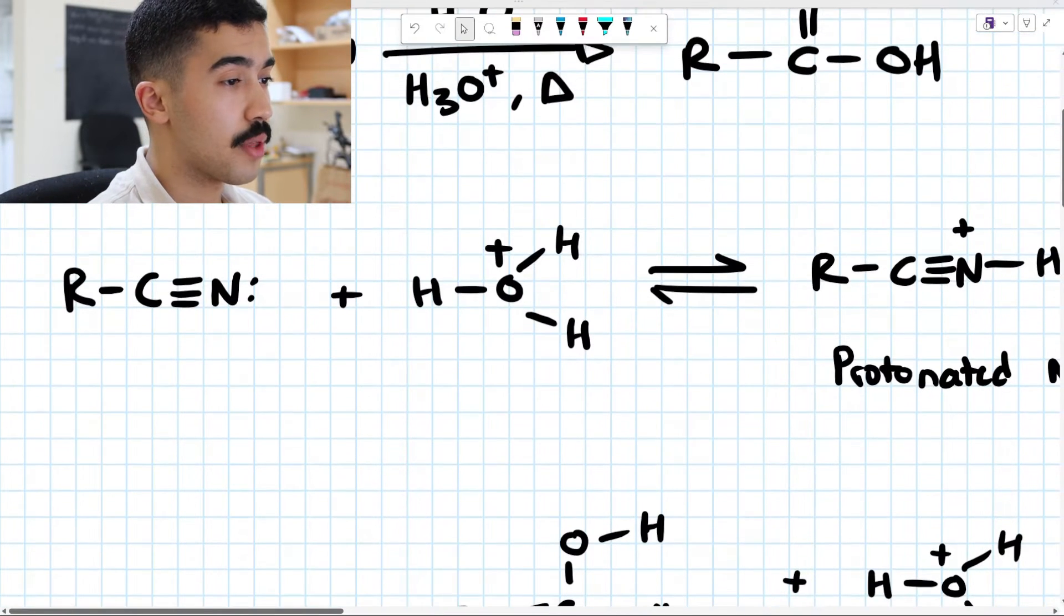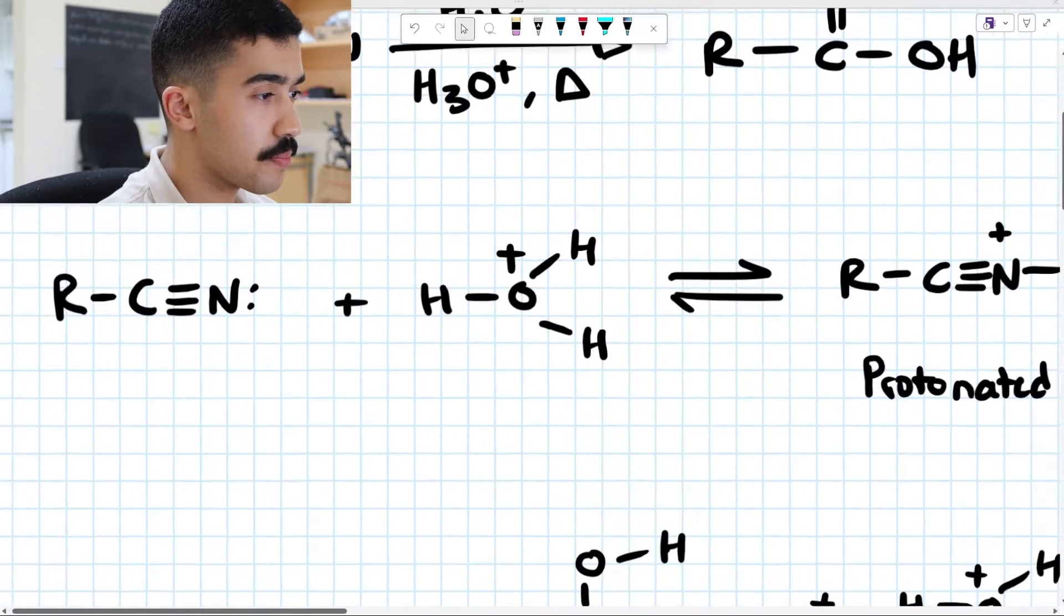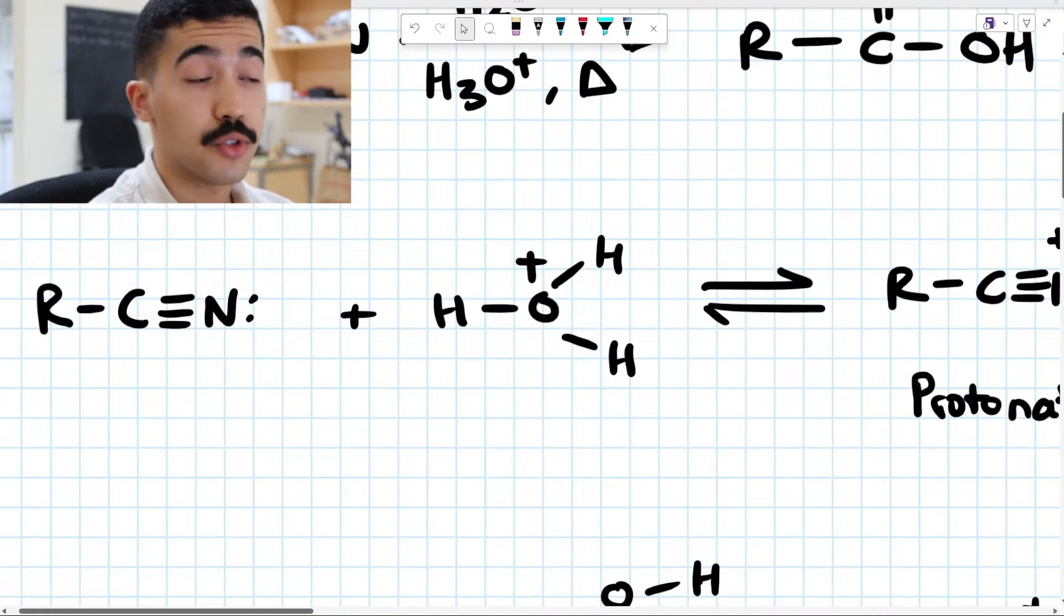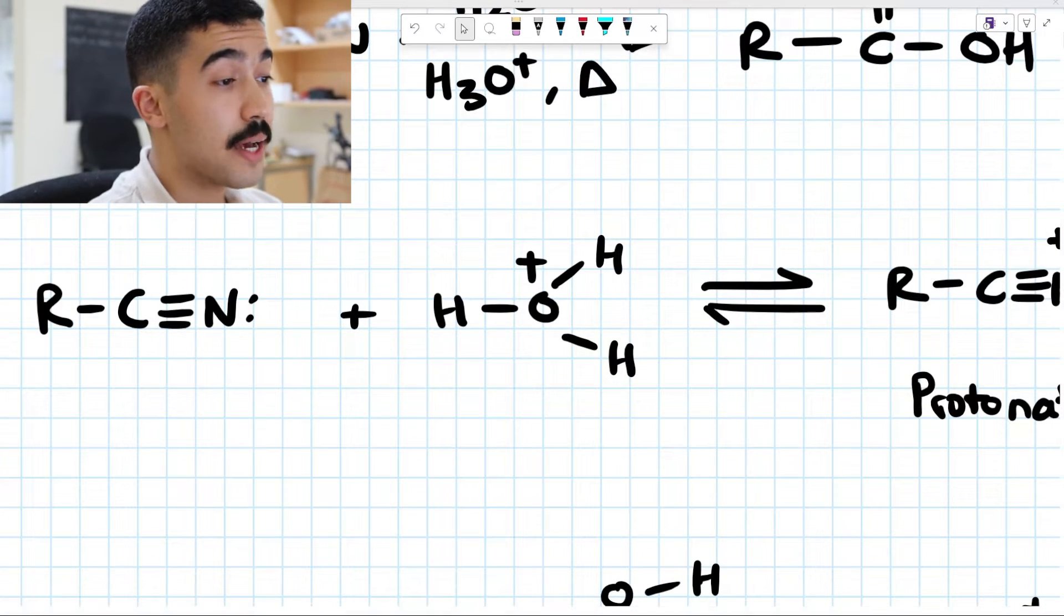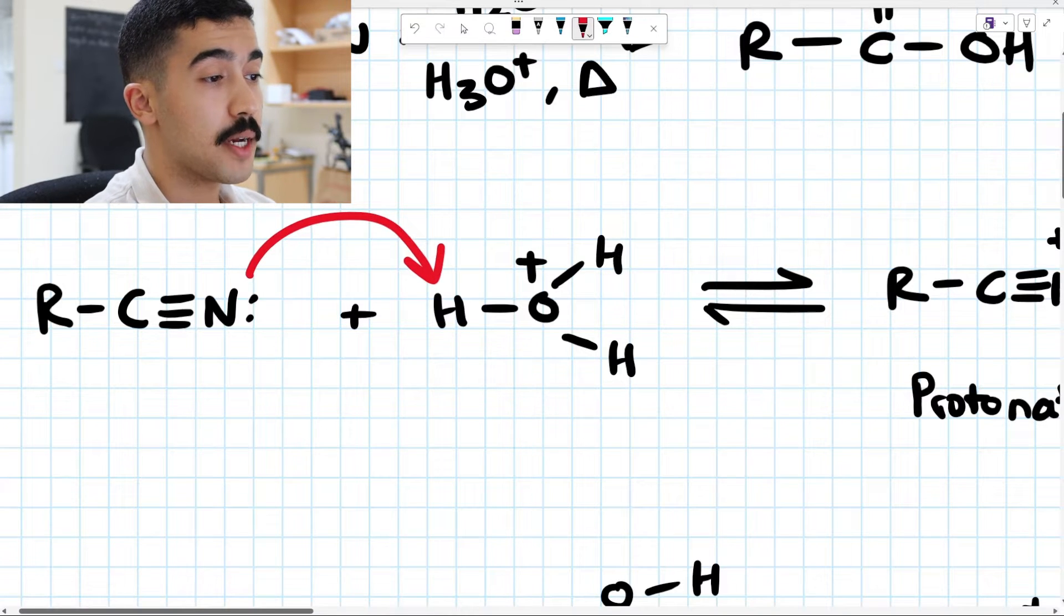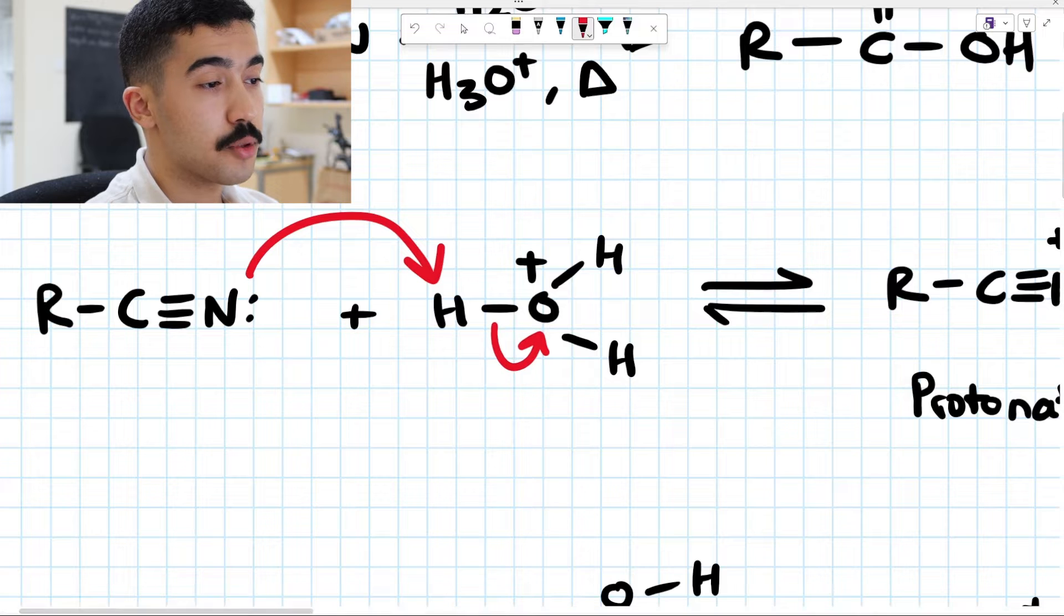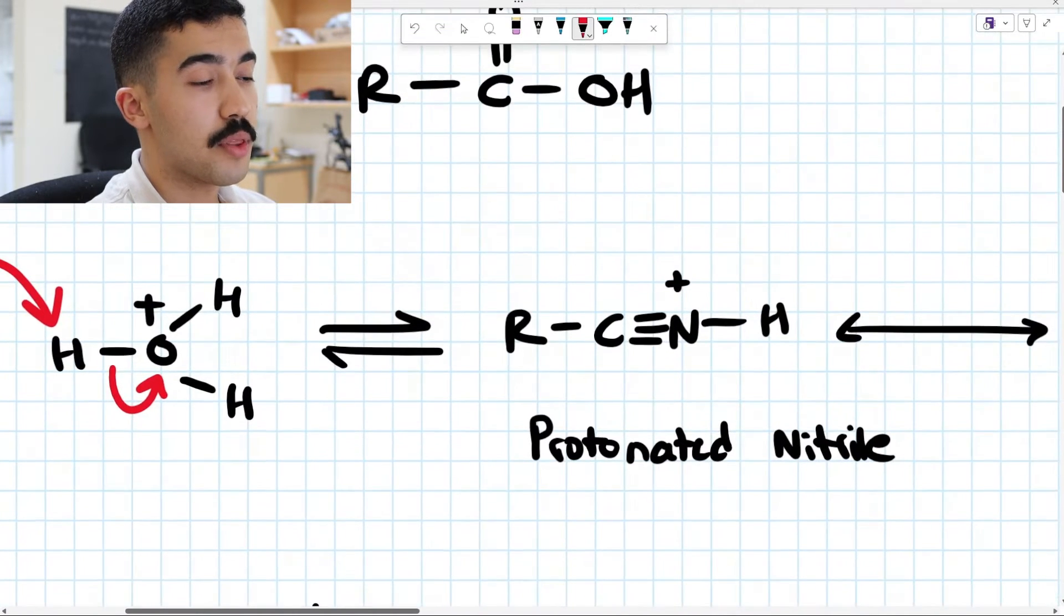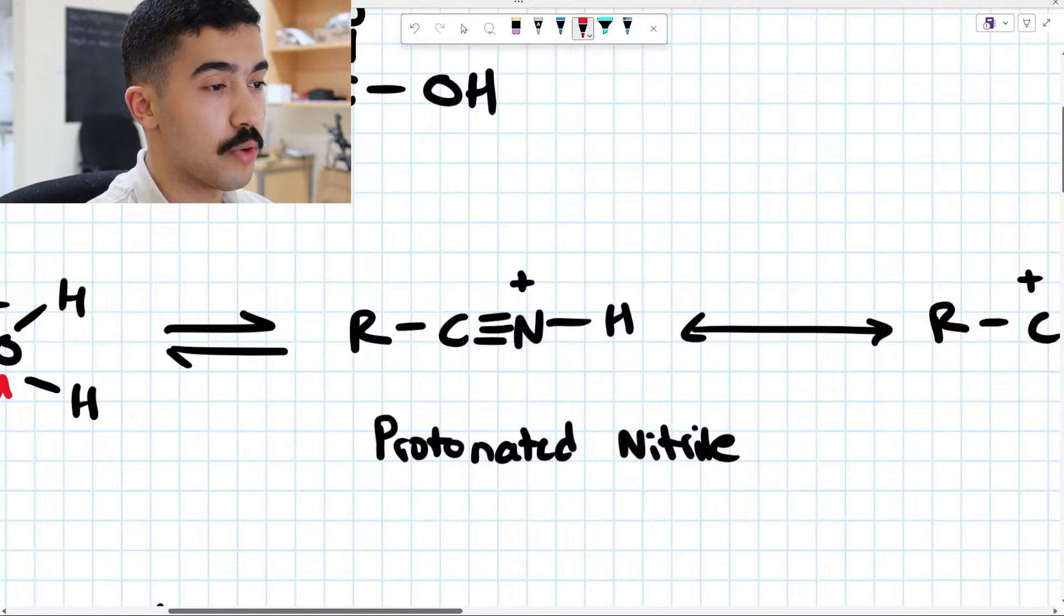So we're going to start off over here with our nitrile. And what's going to happen is we're going to have the lone pair of electrons on the nitrogen attack one of the hydrogens on the H3O+. This bond right here is going to break and collapse towards the oxygen. This is reversible. But essentially what we're going to end up with is our protonated nitrile over here.